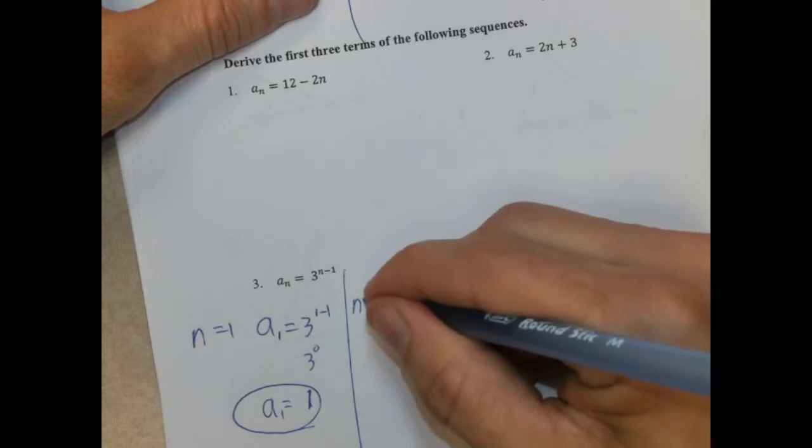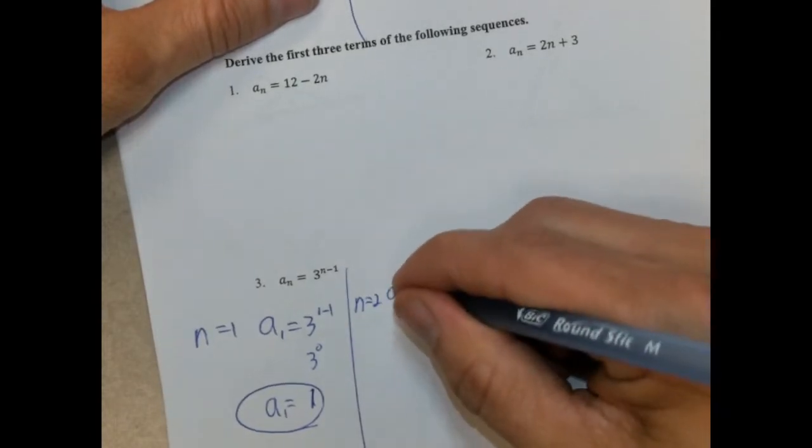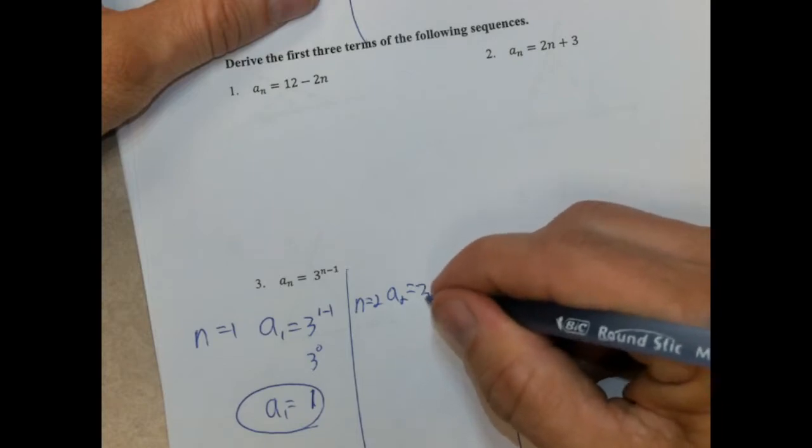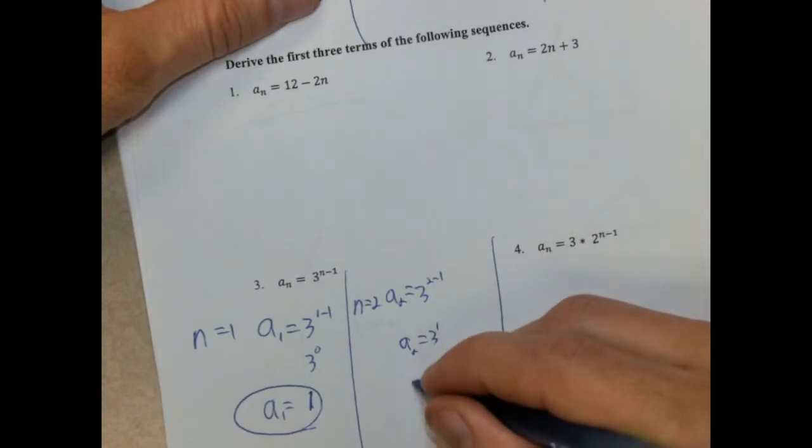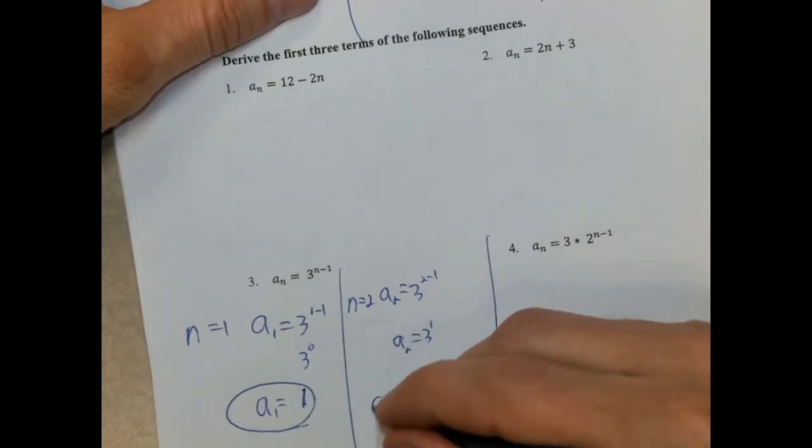When n is 2, we're going to have a_2 equals 3 to the 2 minus 1. a_2 equals 3 to the 1, so it's going to be 3.